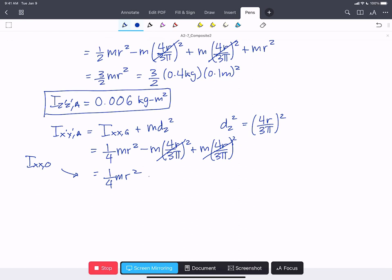We'll put in our specific values, 1/4 times 0.4 kilos times 0.1 meters all squared. And we find that i_x'x' about A is 0.001 kilograms meters squared.